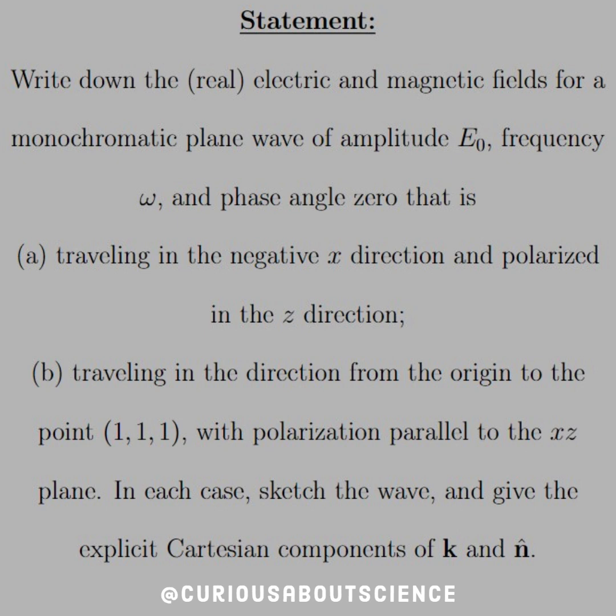Of amplitude E naught, frequency omega, and phase angle of zero. Part A, traveling in the negative X direction and polarized in the Z direction. Part B, traveling in the direction from the origin to the point (1,1,1) with polarization parallel to the XZ plane. In each direction, sketch the wave and give the explicit Cartesian coordinate components of the K vector and the N hat vector.